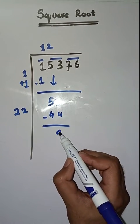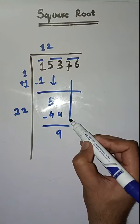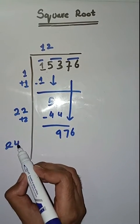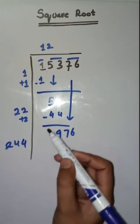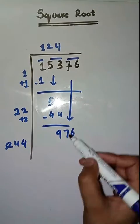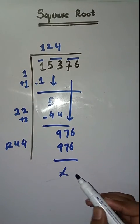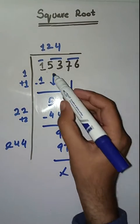Now we will take number 4. 244 times 4 is 976. So it's completely resolved. So square root of 15,376 is 124.